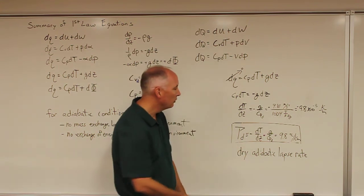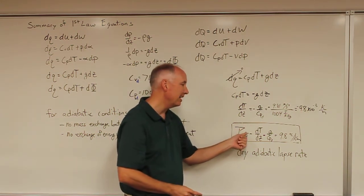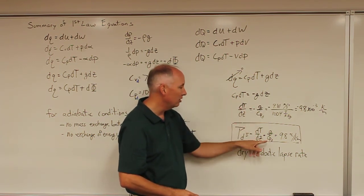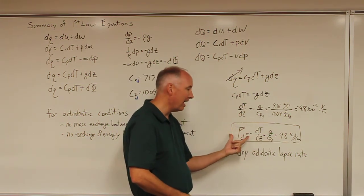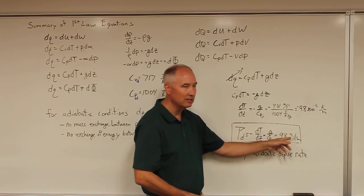Interestingly enough, we define the lapse rate as gamma d is defined as minus dt by dz. And since dt by dz was minus here, that actually translates into a lapse rate, a dry adiabatic lapse rate of 9.8 degrees Celsius per kilometer.